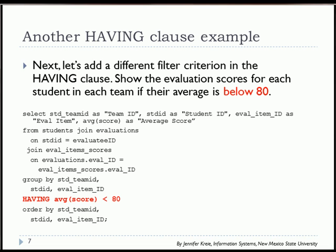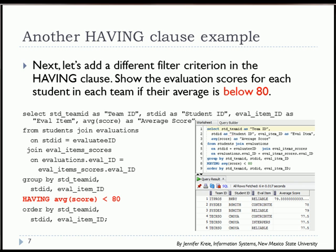So in this example, we're going to look at the evaluation scores with average below 80, and we see that result set, and you can look down through the column on average score to make sure it's meeting the criterion specified.